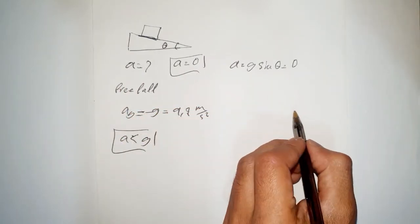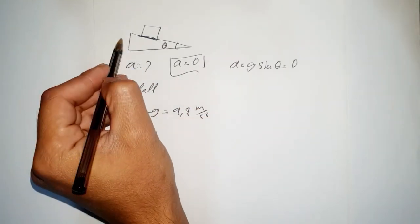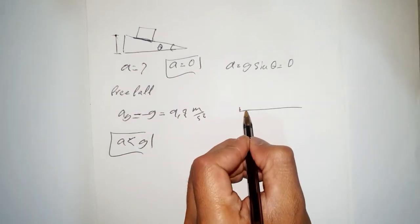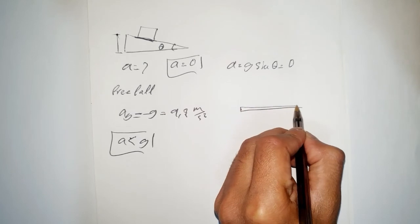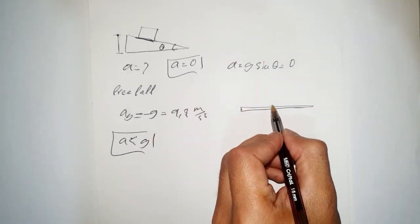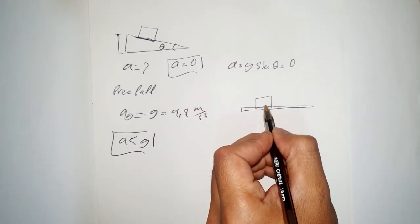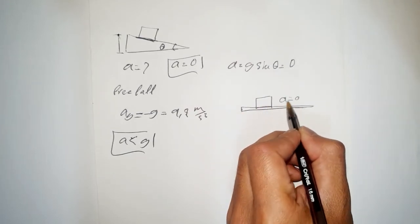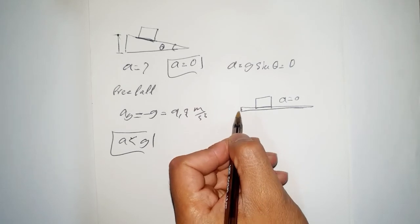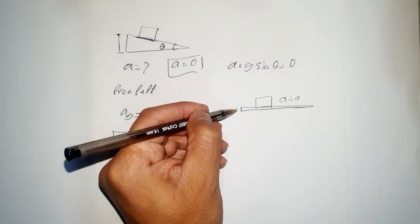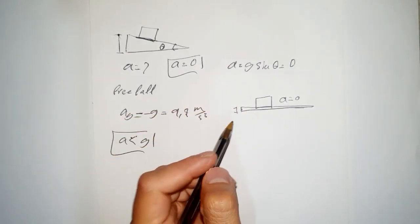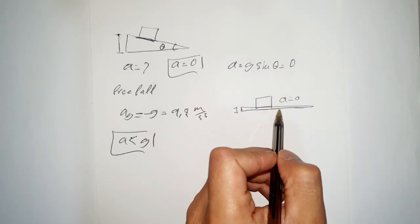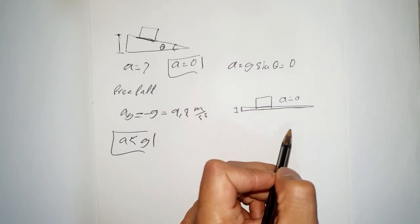When theta is zero, the acceleration is zero. It means the incline is essentially flat. When the acceleration is zero, the box is not moving — the angle of the incline is too small to give the box any movement, so it stays stationary.